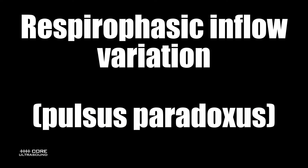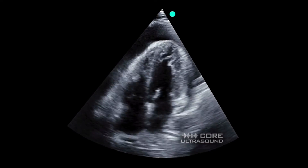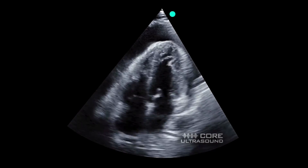The next thing we're going to talk about is respirophasic inflow variation, also known as pulsus paradoxus. This is usually done with the apical four-chamber view using pulsed-wave Doppler through the mitral and tricuspid valves, looking at the peaks and troughs and calculating the variation. If it's greater than 40% through the tricuspid valve or greater than 25% through the mitral valve, that is considered diagnostic for tamponade — although sometimes I struggle with knowing if that's due to tamponade or just movement of the heart with the patient's respirations, so this is one I use less frequently.